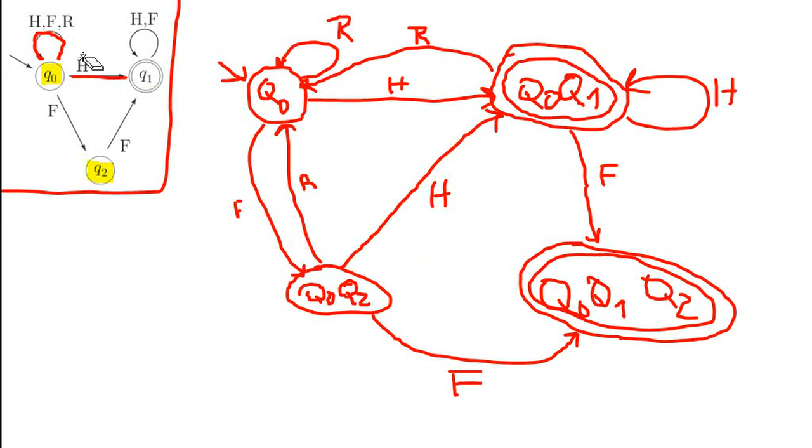So we go to the combined state Q0, Q1 when we have the input H in this state. I was about to say F, sorry for that. With that, we're finished checking this state, so we can remove the markings. We have this last state here that we didn't check yet.